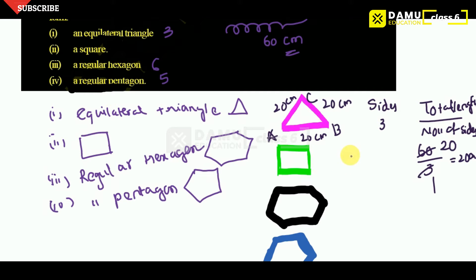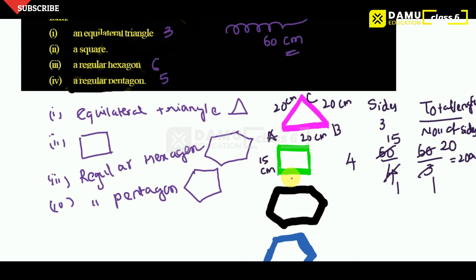Next, for the square, the number of sides will be 4. So each side equals 60 divided by 4, which is 15 centimeters. So all four sides — AB, BC, CD, DA — will each be 15 centimeters.